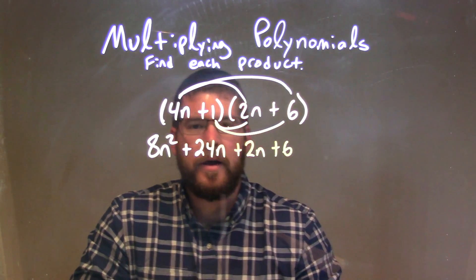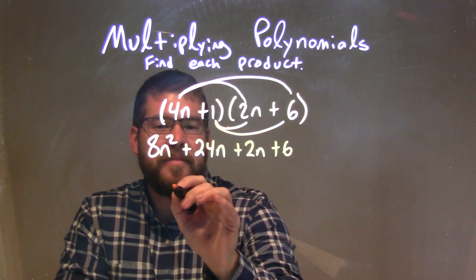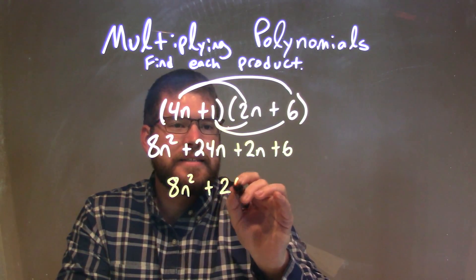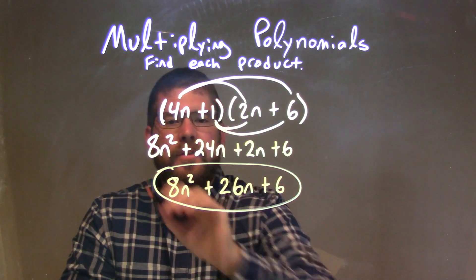So now we simplify. Combined our like terms, 24n and 2n are my only two like terms. That comes out to be 26n, so we have 8n squared plus 26n plus 6, and that is our final answer.